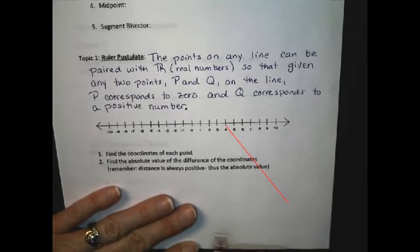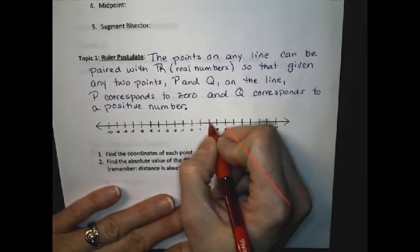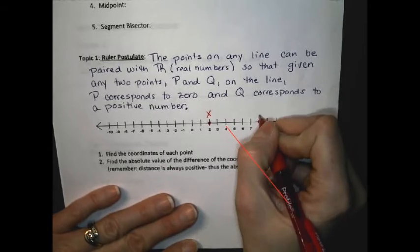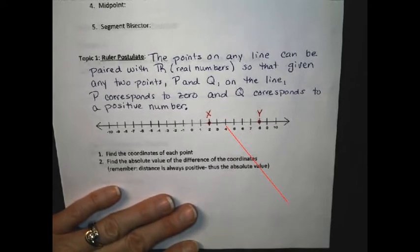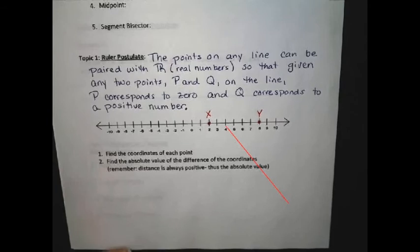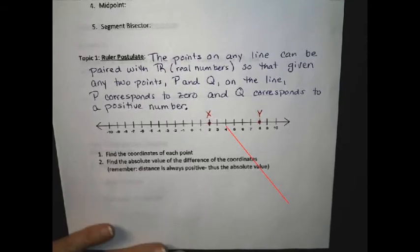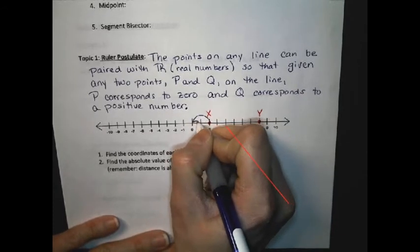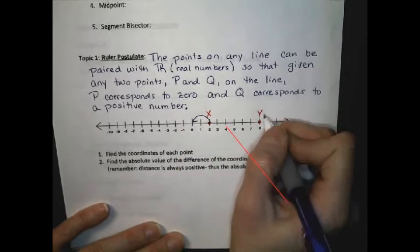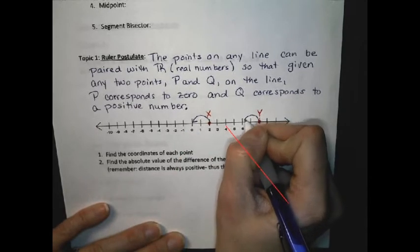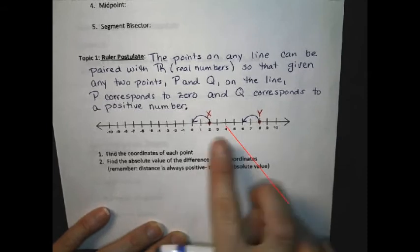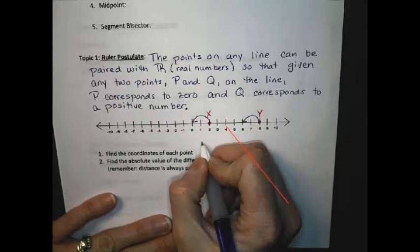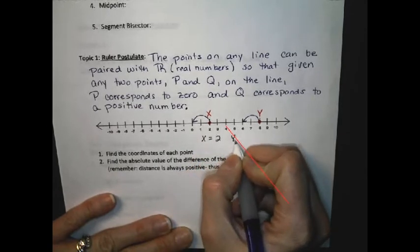So, for example, on this number line, if I were to plot the point X at 2 and the point Y at 8, I would be able to find the distance between these two points by moving the X to correspond to zero, and since I moved it two spaces, or two units, I would do the same to the Y. This would allow me to see that the distance between X and Y is actually six units. X equals 2, Y equals 8.